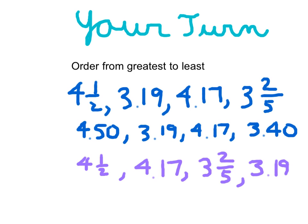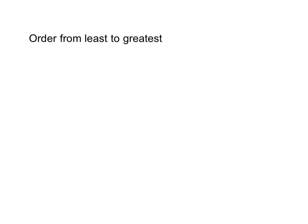Go ahead and check your work. Give yourself a pat on the back if you got it correct. Just learn from your mistake. One of the most common mistakes when ordering numbers is to accidentally order in the wrong direction. So if it says from least to greatest, please do order from least to greatest.